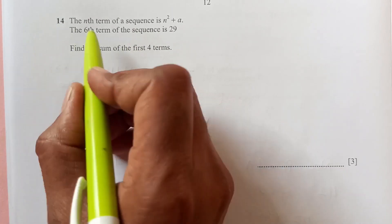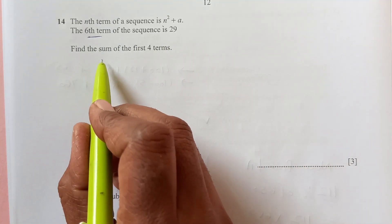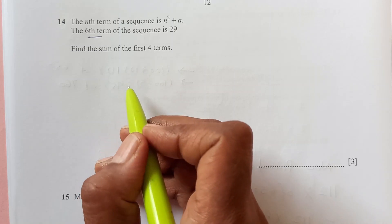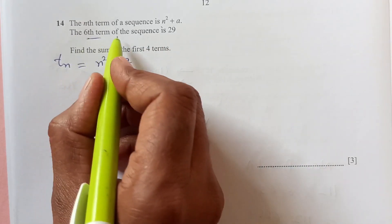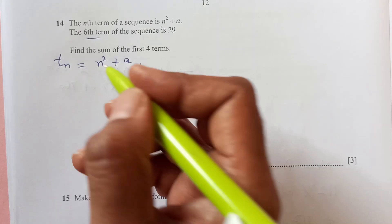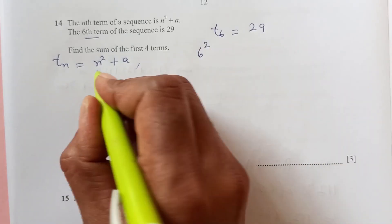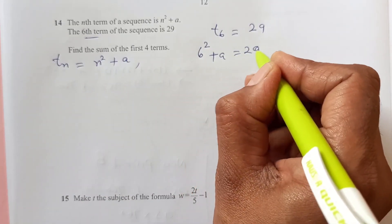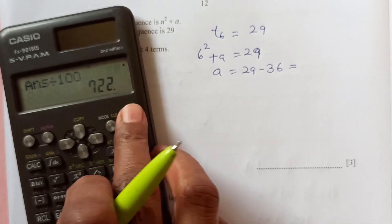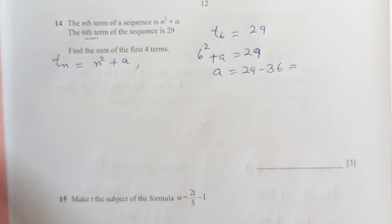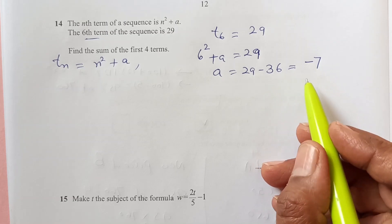Now let's move to number 14. The nth term. We have nth term Tn is n squared plus A, and we are given that 6th term, T6 is 29. T6 is going to get from here. That means 6 squared plus A is equal to 29 and A is going to be 29 minus 36, which is 36 minus 29. It's 7 but it's negative because 36 is greater than that. So now this is our value of A.